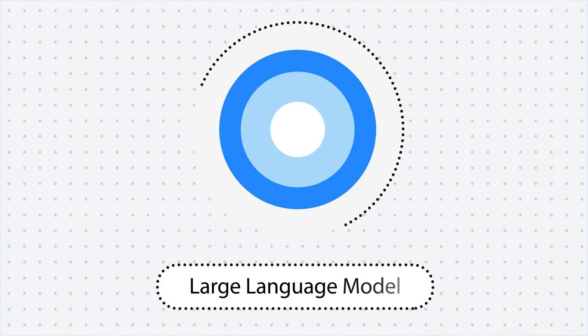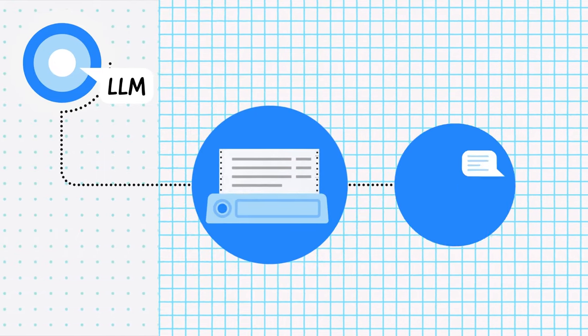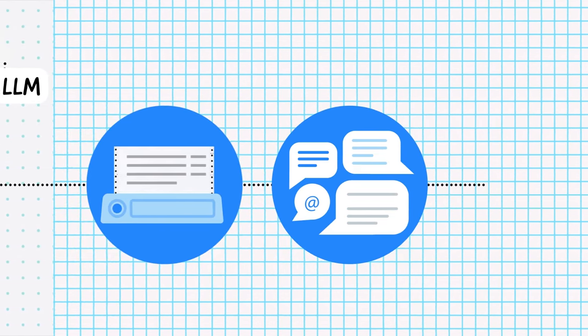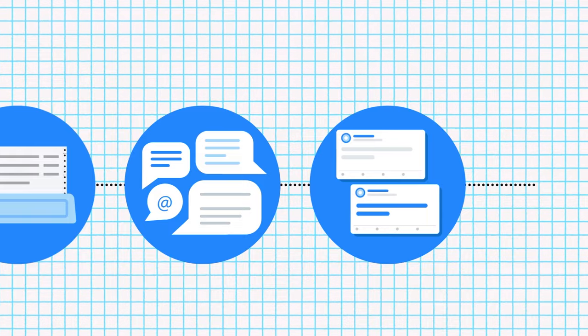Unless you've been living under a rock, you've probably heard that AI is getting very good at conversation. In fact, maybe you've even chatted with one of these AIs through a chatbot interface like Google Bard. This is all thanks to a powerful kind of neural network called a large language model, or LLM. In this video, we're going to talk about what LLMs are and how anyone can get started building with them, whether you're a developer or not. Let's dive in.